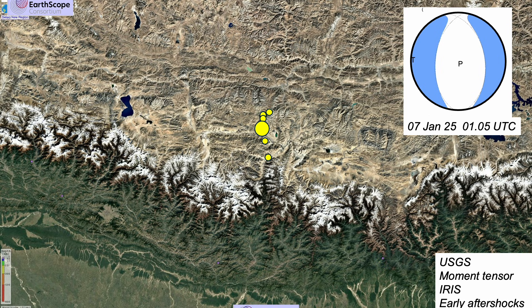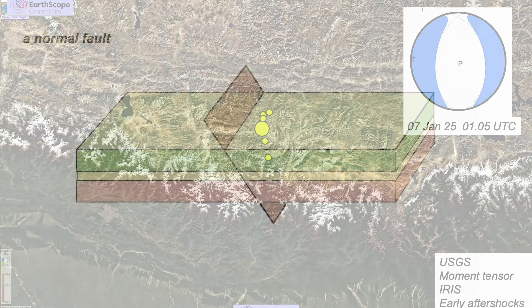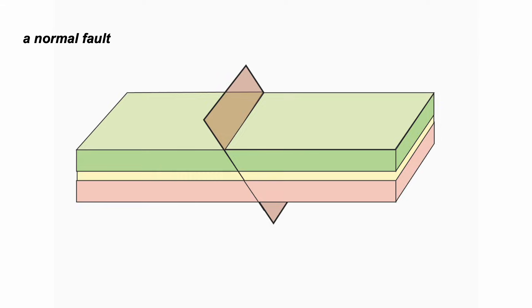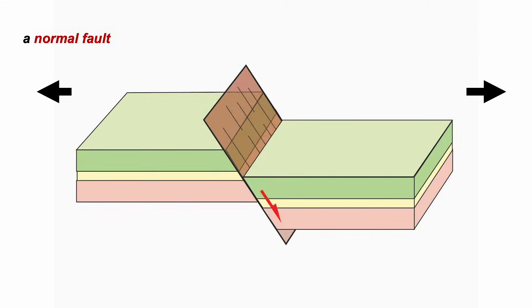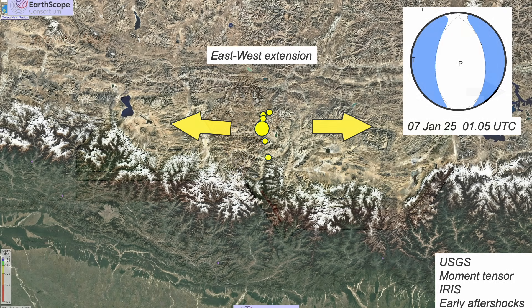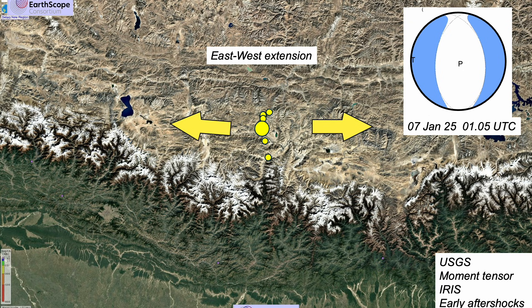What the moment tensor tells us is that the fault plane upon which the earthquake occurred trends north-south, and is a normal fault, which means that the crust here has been split apart — east-west extension.